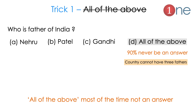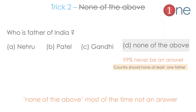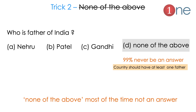The first trick: 'All of the above' most of the time is never the answer. Suppose we have a question: 'Who is the father of India?' Options are A: Nehru, B: Patel, C: Gandhi, D: All of the above. All of the above cannot be the answer because a country cannot have three fathers. So 'all of the above' most of the time is not the answer.